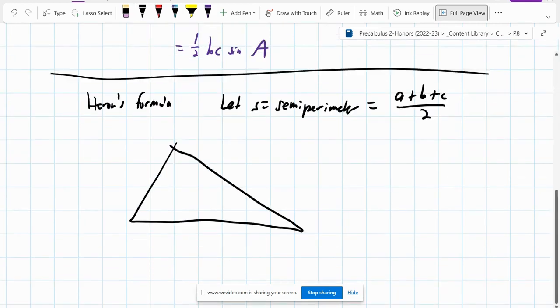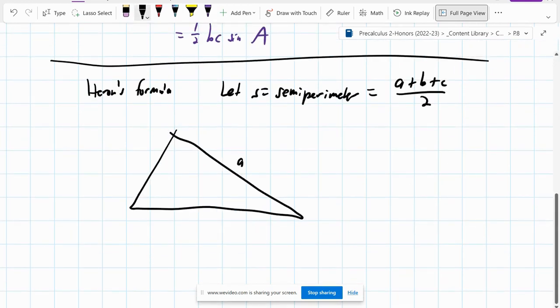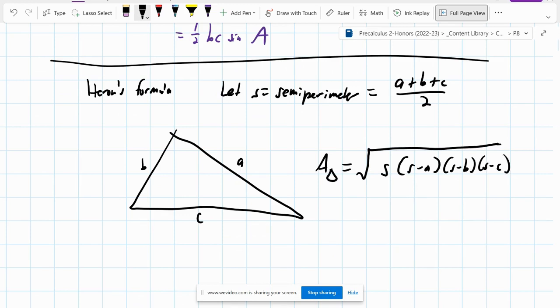So if I have a triangle with side lengths of A, B, and C, I don't need anything else to get the area. The area of this triangle is the square root of the semi-perimeter times the semi-perimeter minus A, semi-perimeter minus B, and semi-perimeter minus C. And that's it.